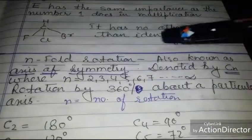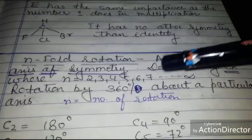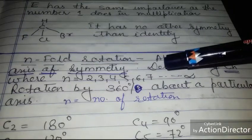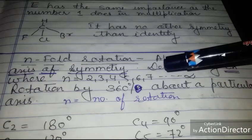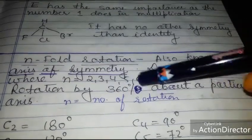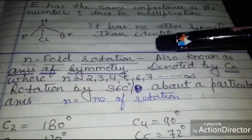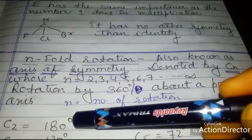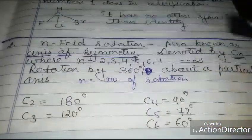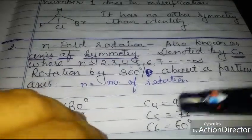The second operation is the n-fold rotation. In terms of element it is known as the axis of symmetry. You apply an axis and then give a rotation. N denotes the number of rotations required to get an equivalent or identical configuration — it is also called the order of rotation. It is given by N = 360°/θ, where θ is the angle of rotation. So 180° gives C2, 120° gives C3, 90° gives C4, 72° gives C5, and 60° gives C6, and so on.